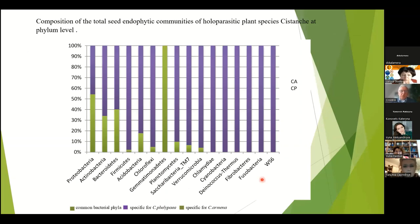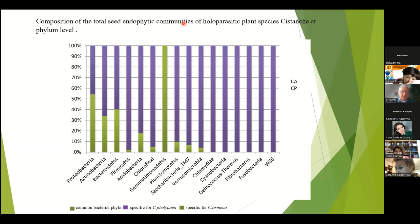The next question was to compare the Cistanche armena and Cistanche philippea, the composition of endosymbiotic communities. This was based on 16S RNA sequencing. We look at the common species shown in dark, grey, and green, or specific for Cistanche philippea from Portugal, and specific for Cistanche armena.